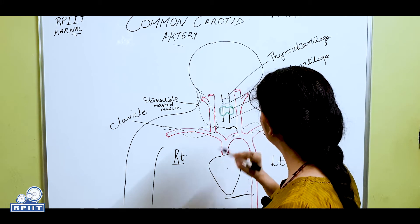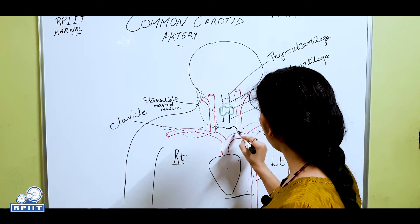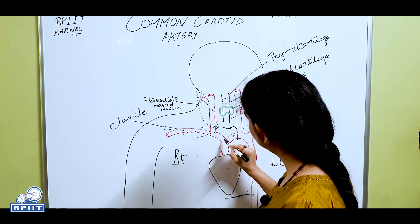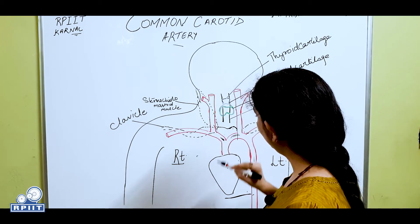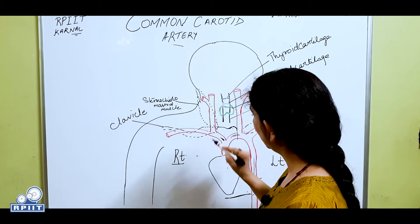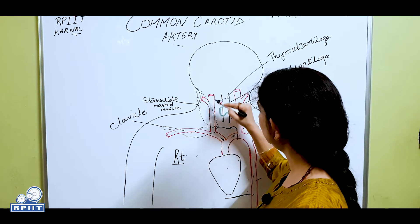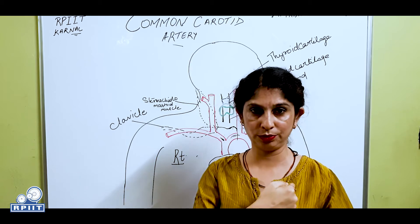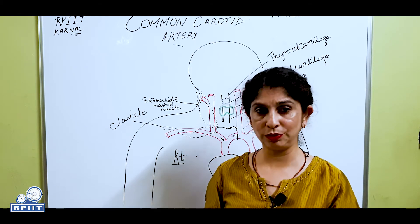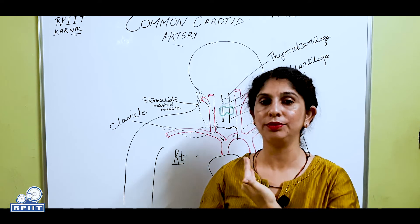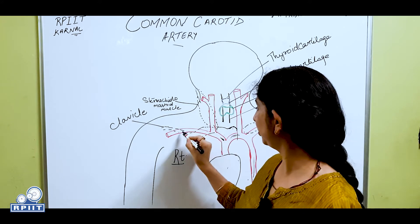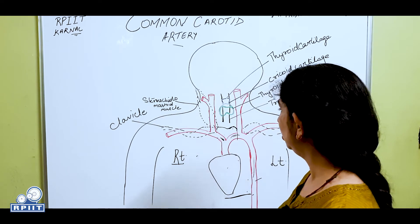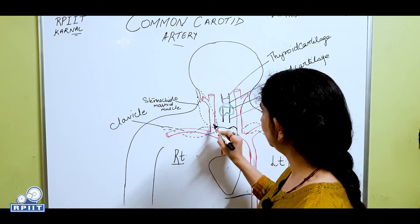If we divide the arch of aorta into two parts — right side and left side — from the right side a trunk arises which is further divided into two parts: one going to the brachial region and one to the cephalic region. Because it supplies both the brachial and cephalic regions, it is known as the brachiocephalic trunk.